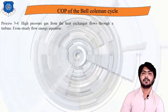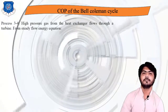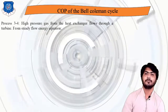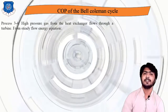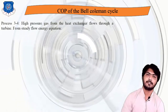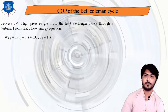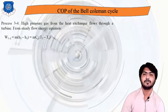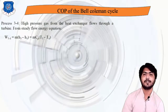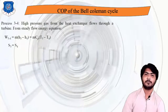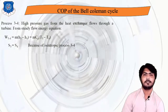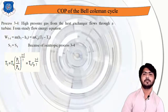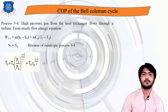In process 3 to 4, high-pressure gas from the heat exchanger flows through the turbine. Applying SFEE, the work output from the turbine is: W34 = m(H3 − H4) = mCp(T3 − T4). For the isentropic process: T3/T4 = (P3/P4)^((γ−1)/γ), which allows calculation of temperature T4 after expansion.